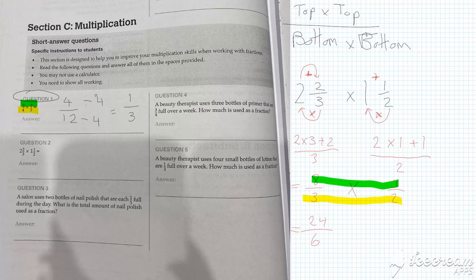With this one, what we can see is that the number on the bottom is smaller than the number on top. So we're going to say how many 6's fit into 24. And it's a lovely 4. So that will be our answer for question 2.